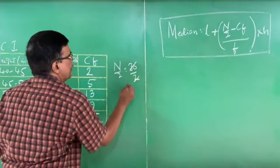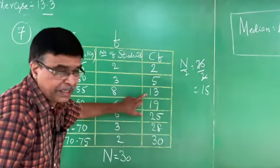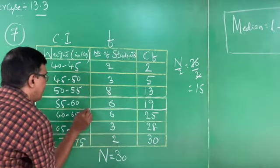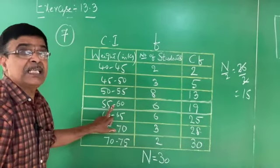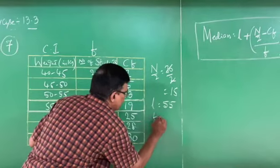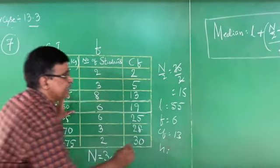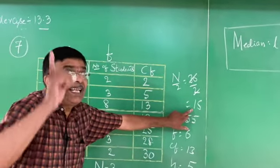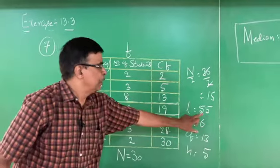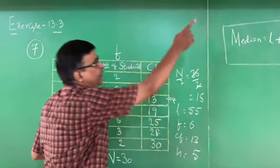N/2 = 30/2 = 15. Observing the CF column: 2 not there, 5 not there, 13 not there... 15 lies at the class interval 55 to 60 (since CF goes from 13 to 19). Therefore, the median class is 55 to 60. L = 55, CF = 13, F = 6, H = 5.